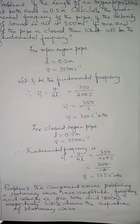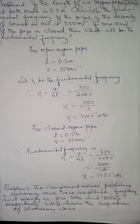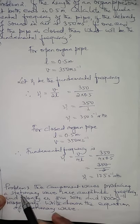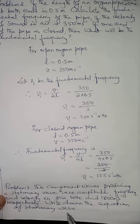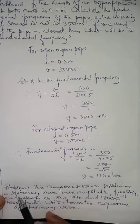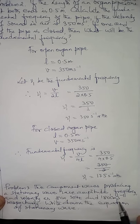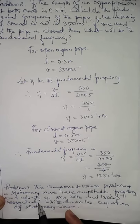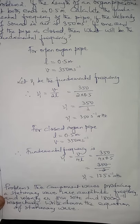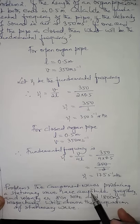We will solve the last numerical problem from this chapter to complete it. Problem 3 says: the component waves producing a stationary wave have amplitude 8 cm, frequency 30 Hz, and velocity 180 cm/s. Write down the equation of the stationary wave.